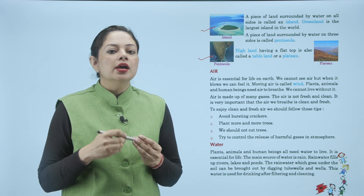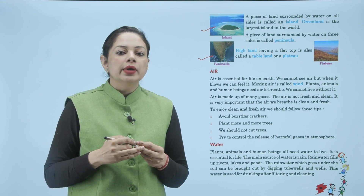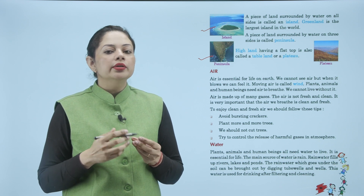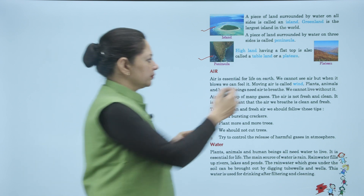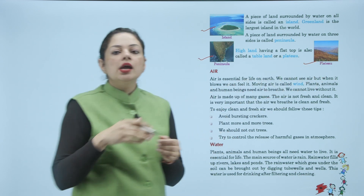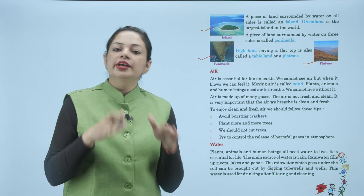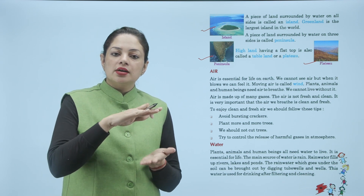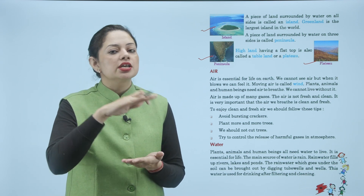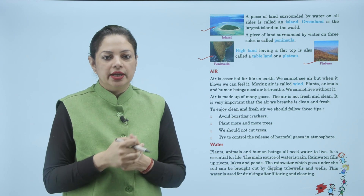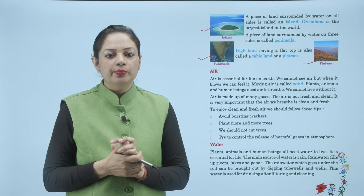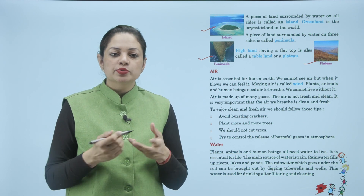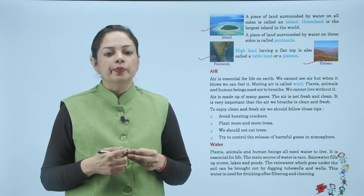Highland having a flat top is also called a tableland or a plateau. ये hill होती है न mountain होती है न plain — सिर्फ थोड़ा सा high level land होती है जिसका top flat होता है, इसको tableland भी बोलते हैं और plateau भी बोलते हैं। Clear — types of land? Now come to the next topic: Air.